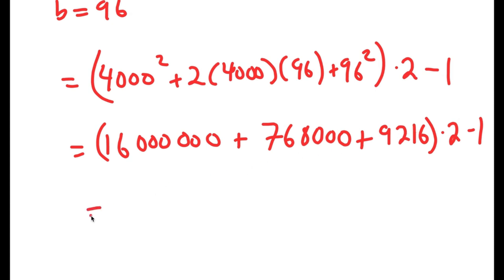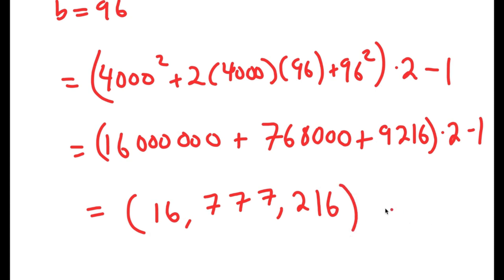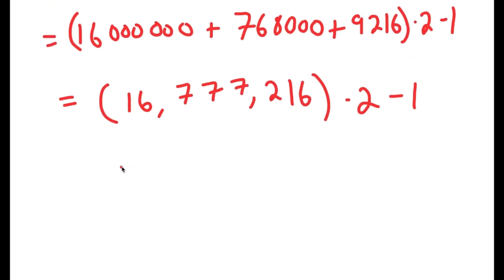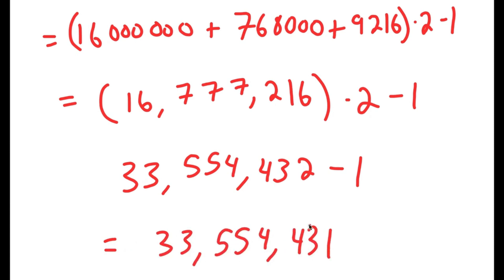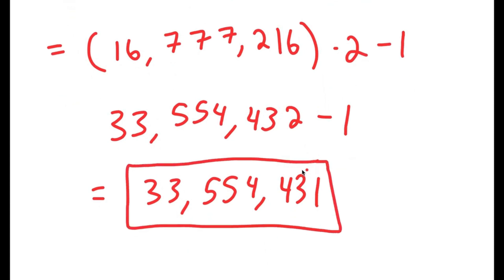Now I'm going to add all these up. If I add all of these up in the parentheses, I get 16,777,216. Now I have this times 2 minus 1. So if I multiply this by 2, I get 33,554,432. And I have this minus 1, which is equal to 33,554,431. So this is my answer to this problem.